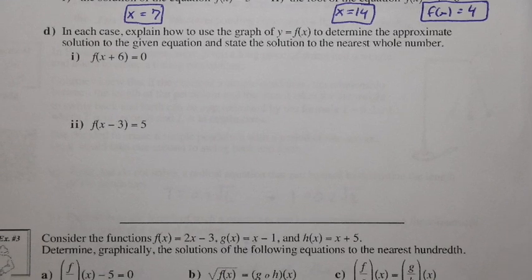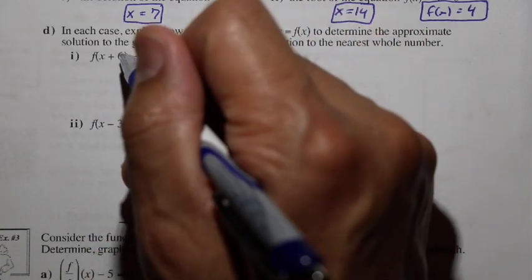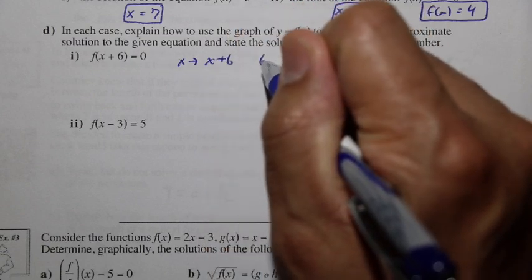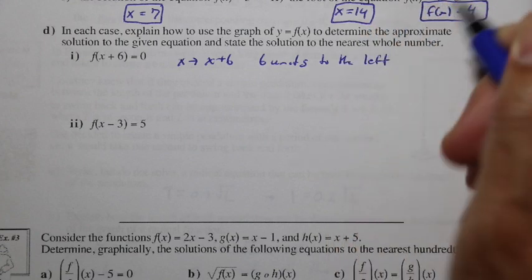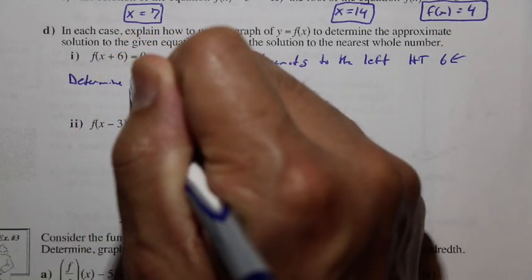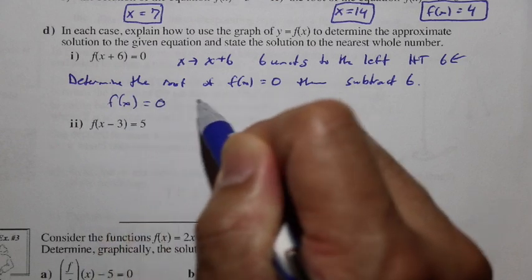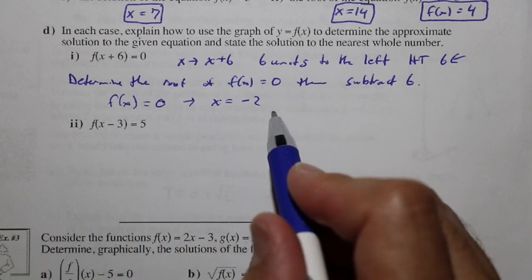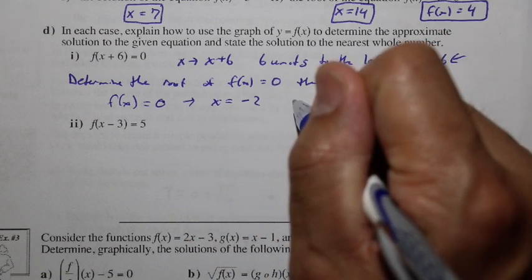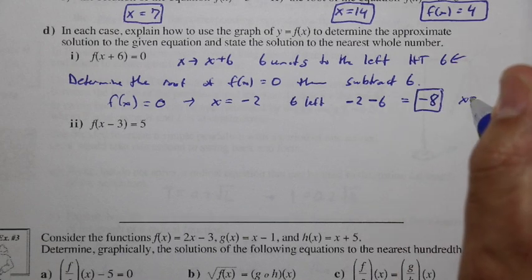For part d, explain how to use the graph of y equals f of x to solve f of x plus 6 equals 0. Since x is replaced with x plus 6, this is a horizontal translation of 6 units to the left. We find the root of f of x equals 0, which is x equals negative 2, and then subtract 6. Moving 6 units to the left gives negative 2 minus 6 equals negative 8, so x equals negative 8.